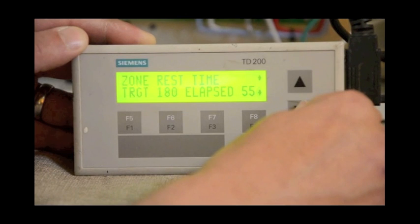The zone rest timer shows the amount of time set for a rest and the amount of time that has elapsed since the previous dose. Our last two screens include the field flush counter, which counts the number of flushes in this cycle, and displays the next zone to dose.